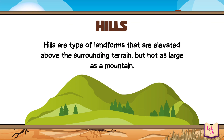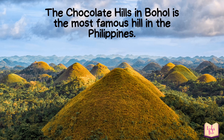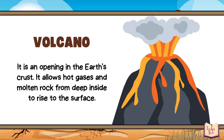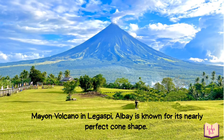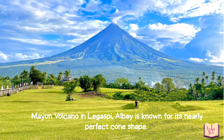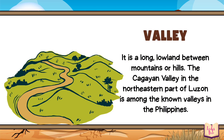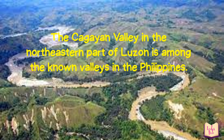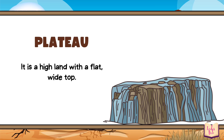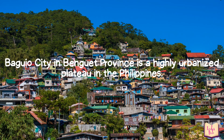Hills are a type of landform that are elevated above the surrounding terrain, but not as large as a mountain. The Chocolate Hills in Bohol is the most famous hill in the Philippines. Volcano is an opening in the Earth's crust that allows hot gases and molten rock from deep inside to rise to the surface. Mayon Volcano in Legazpi, Albay is known for its nearly perfect cone shape. Valley is a long low land between mountains or hills. The Cagayan Valley in the northeastern part of Luzon is among the known valleys in the Philippines. Plateau is a high land with a flat wide top. Baguio City in Benguet Province is a highly urbanized plateau in the Philippines.